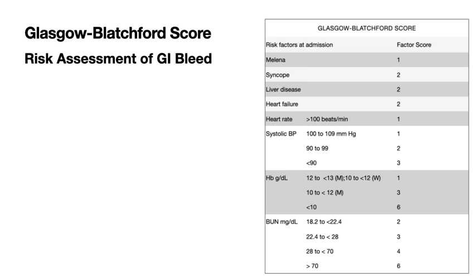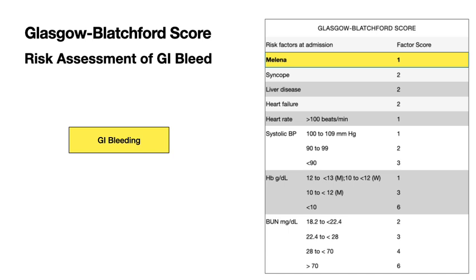Let us look at the various variables. These include melena, syncope, liver disease, heart failure, heart rate, systolic blood pressure, hemoglobin, and BUN — each with a particular score. When you look at melena, you are evaluating whether the patient had a GI bleeding of significance. Just hematemesis without melena in the Glasgow Blatchford score does not have any points. This patient came in with coffee ground emesis, which is taken as hematemesis, but that itself has no scoring points.